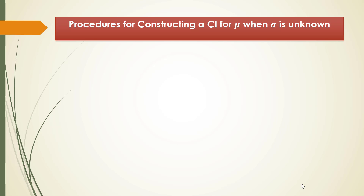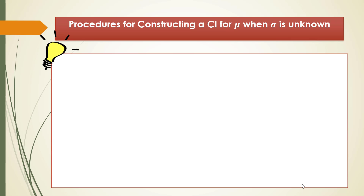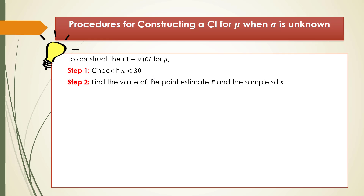Now we have all we need to construct the confidence interval for mu when sigma is unknown. To construct a 1 minus alpha confidence interval for mu when sigma is unknown, first check the assumption. If n is greater than 30, x-bar follows a normal distribution approximately, so we use the normal distribution. If n is less than 30, we use the student t distribution.